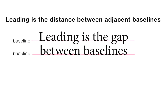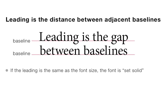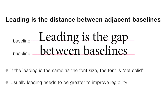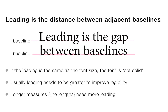Leading is the distance between two adjacent lines of type — technically between the baselines of those lines, as you can see here. If the leading is the same as the font size, the font is said to be set solid. Normally the leading will be slightly more than the font size, as you need a little extra leading to make the type more readable. The longer the length of the lines — or the measure, as it's called — the more leading you need to make the type readable.